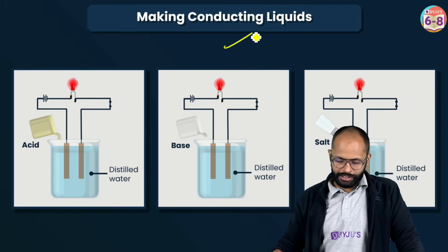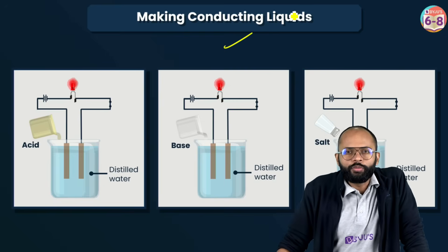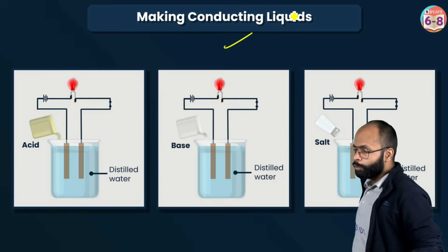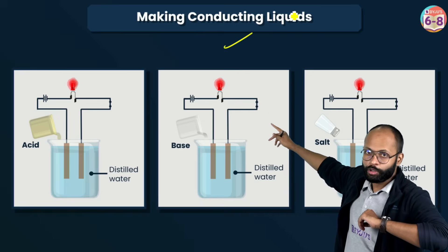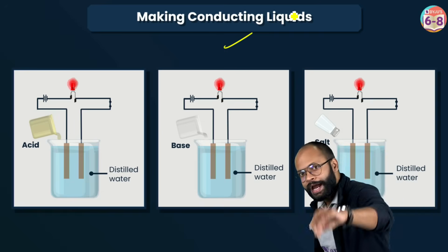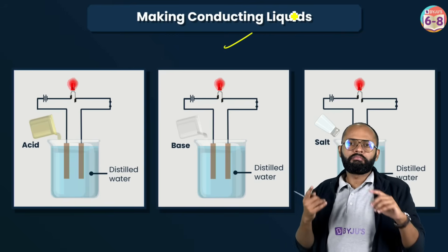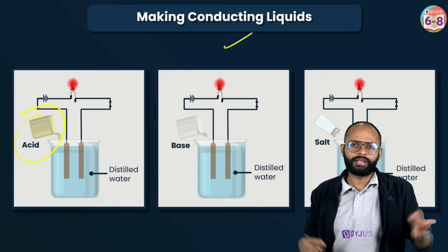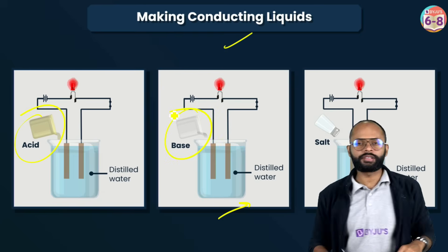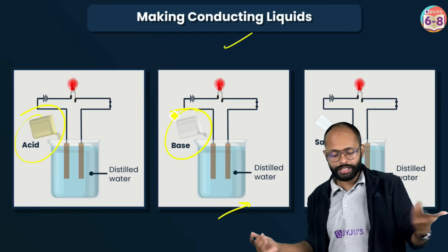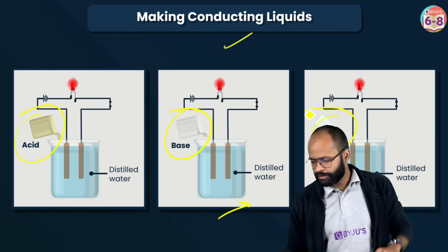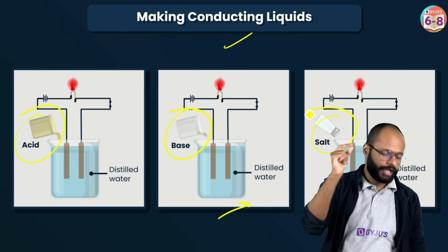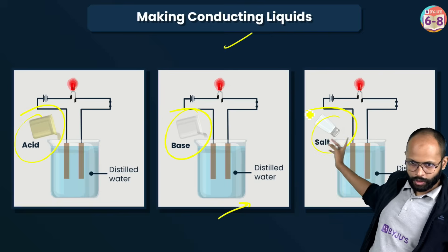Making conducting liquids. If you want to make distilled water conductive, how will the question come? Distilled water was there and the LED was not glowing. I will give you four options. Which of them should I add so that this LED will glow? Because LED glowing means current will pass. So what should I add in this distilled water such that current passes? You have to give it ions. Give some acid: acetic acid, vinegar, citric acid, lemon juice, lactic acid, milk. You can add base: soap solution. Add salt: table salt. So acid, base or salt, add whatever you want. But this will increase the conductivity of the solution and the LED will glow. It's a very direct question.